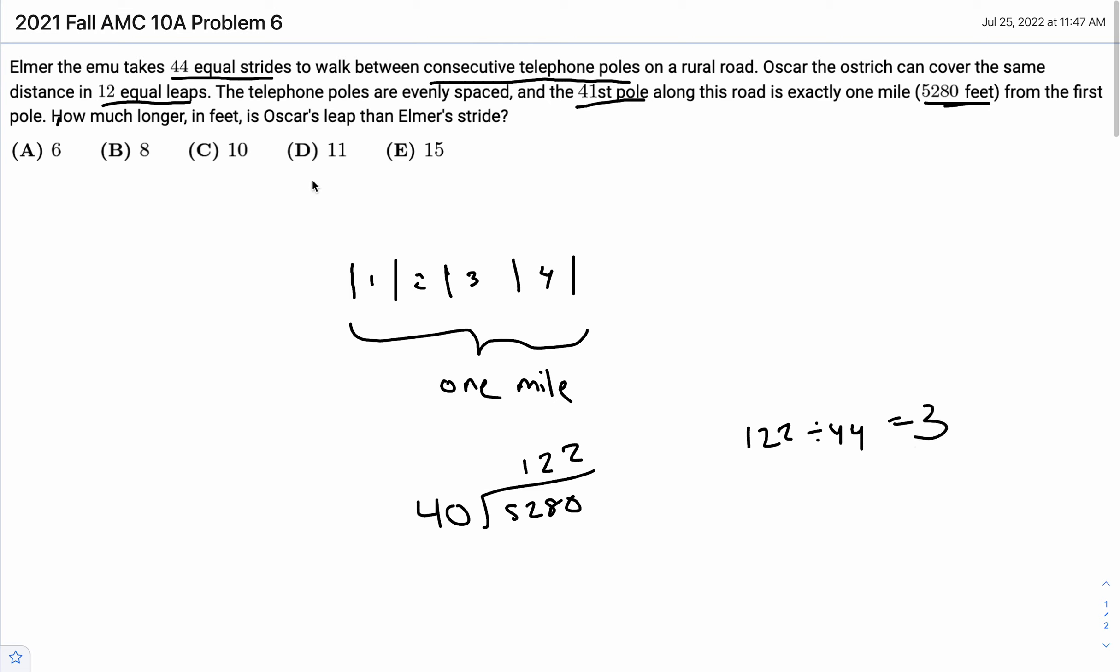Doing the same thing with Oscar's leaps, we find that 132 divided by 12 is 11. And what we do is just 11 minus 3, and our answer is 8, option B.